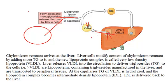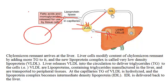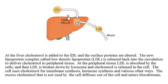The more triglycerides you remove, the density changes. As the density changes, we now call it intermediate density lipoprotein. So this VLDL, as more and more fatty acids are removed, will eventually become intermediate density lipoprotein. This intermediate density lipoprotein will be delivered back to the liver by the circulation. Once the intermediate density lipoprotein gets into the liver, the liver will add cholesterol to it.